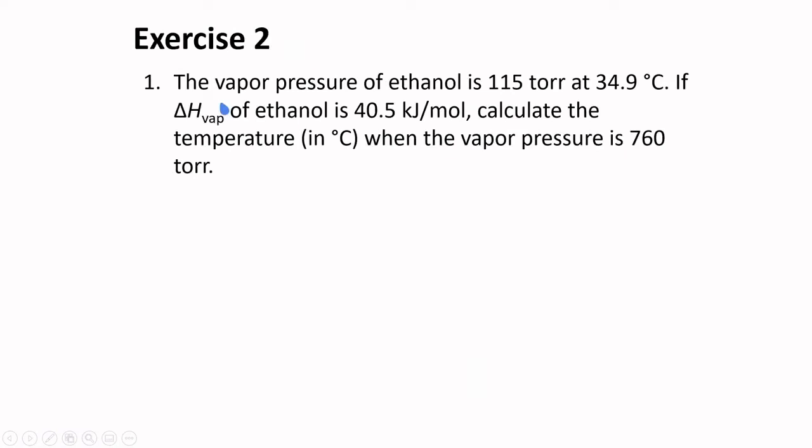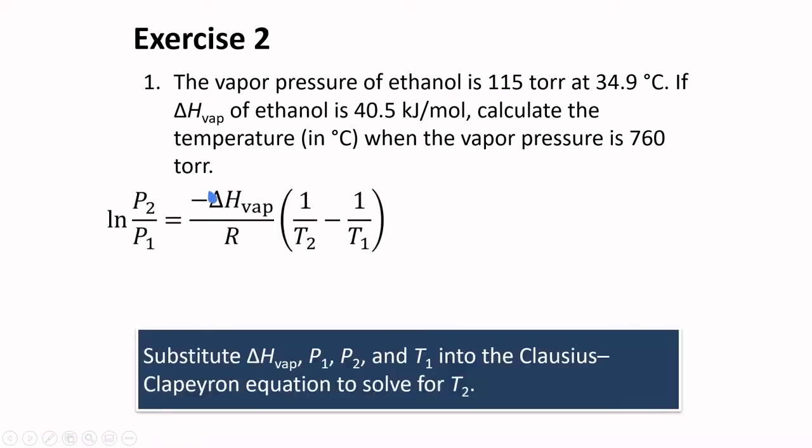Exercise 2: The vapor pressure of ethanol is 115 torr at 34.9 degrees Celsius. If the heat of vaporization of ethanol is 40.5 kJ per mole, calculate the temperature when the vapor pressure is 760 torr. Here, we can use the Clausius-Clapeyron equation. P1 and T1 are given, that is, 115 torr and 34.9 degrees Celsius. P2 is also given, that is, 760 torr.